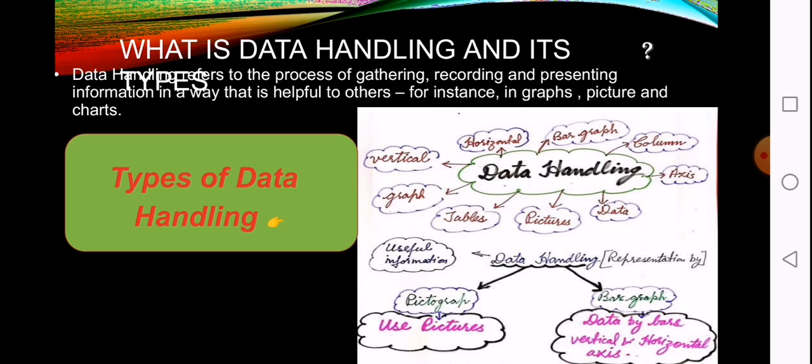See the mind mapping of data handling: horizontal bar graph, column axis, data pictures, tables, graphs, and vertical data. Handling has two types: pictograph and bar graph. Data used by pictures is known as pictograph, and data by bars with vertical and horizontal axis is known as bar graph.